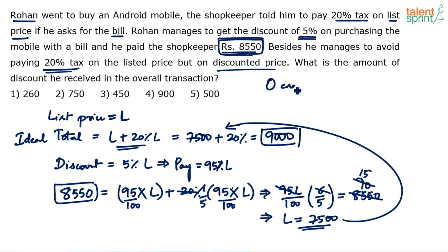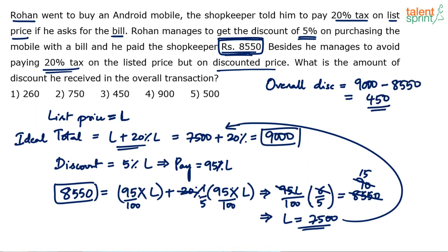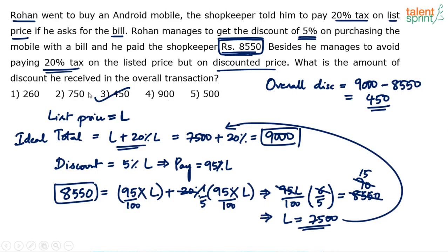Overall discount equals ₹9,000 minus ₹8,550, which is equal to ₹450. Remember, this looks lengthy because it has been explained in detail. If you cut down the number of steps, this would become a simple solution. The same thing can also be solved by using a list price of 100.